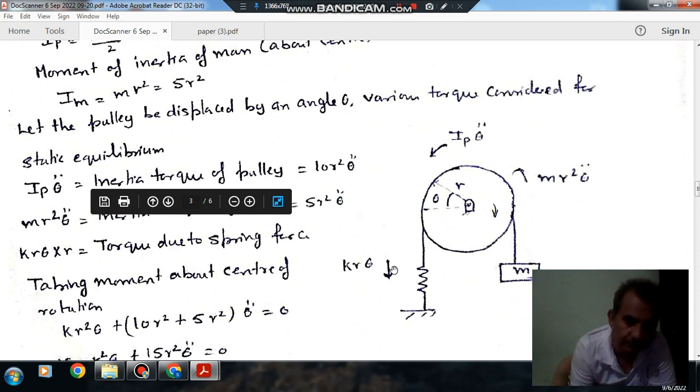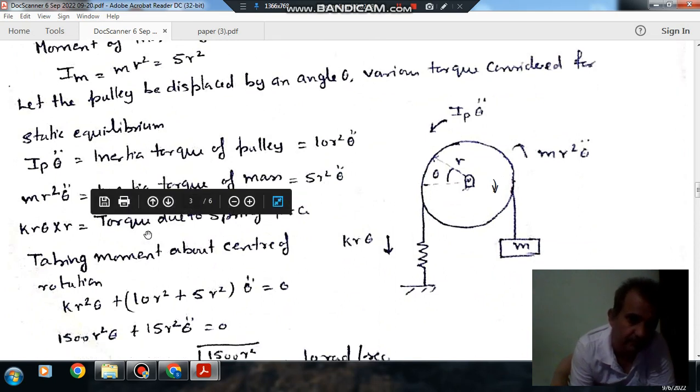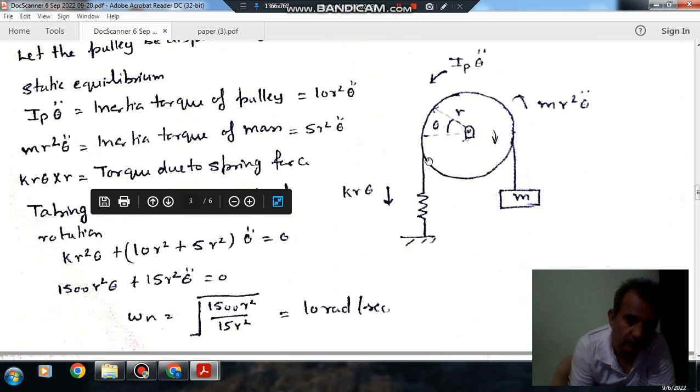So now the torque exerted by this spring force is KR theta into R, which is KR square theta. So now if you take moment about point O, then it will be KR square theta plus IP theta double dot.